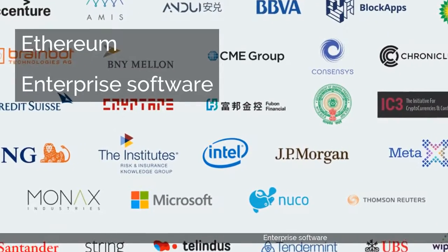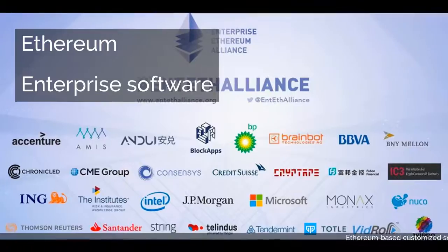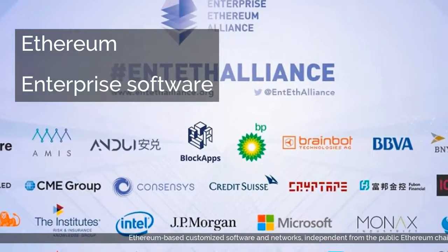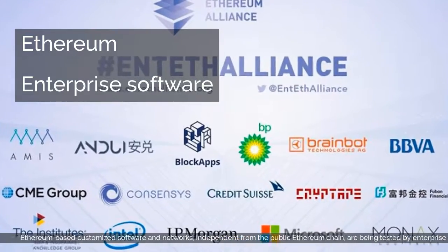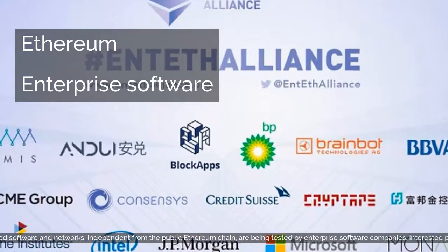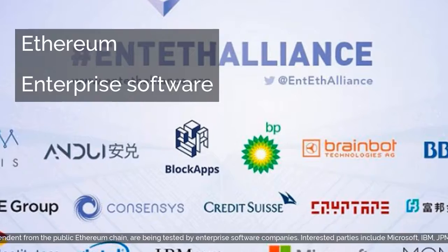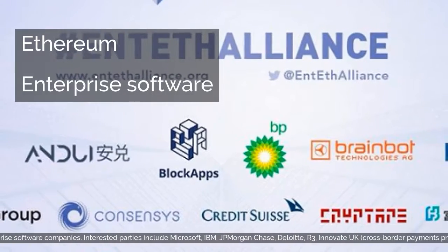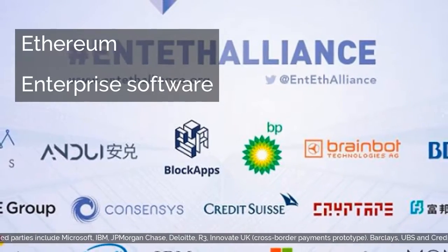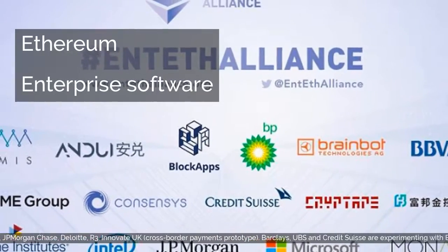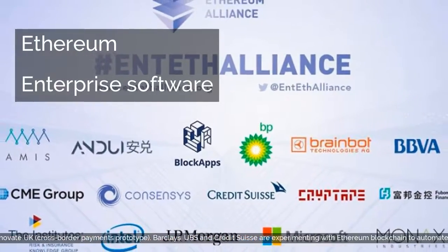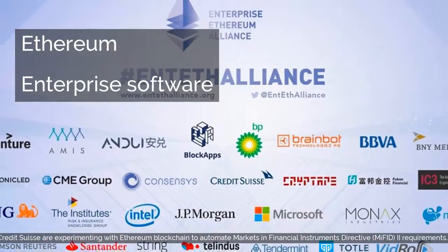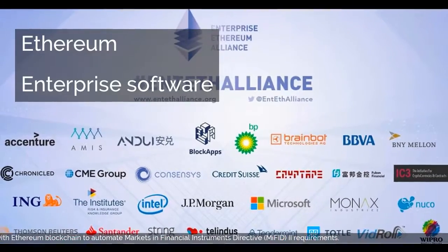Ethereum-based customized software and networks, independent from the public Ethereum chain, are being tested by enterprise software companies. Interested parties include Microsoft, IBM, JPMorgan Chase, Deloitte, R3, Innovate UK, and the Cross-Border Payments Prototype. Barclays, UBS and Credit Suisse are experimenting with Ethereum blockchain to automate markets in Financial Instruments Directive, MIFID2 requirements.